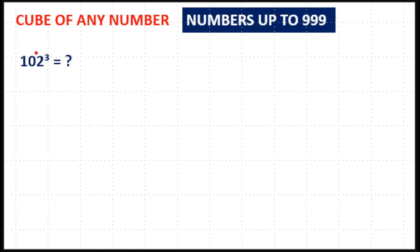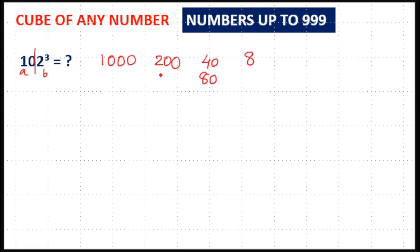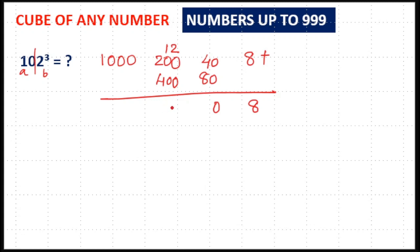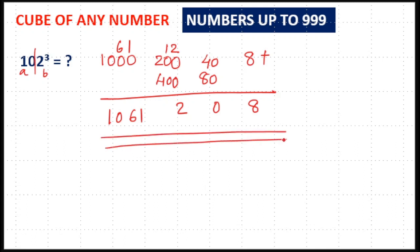Next is 102 cube — a 3-digit number. Split 102 as 10 and 2, so a = 10 and b = 2. 10 cube = 1000, 2 cube = 8. 10² × 2 = 100 × 2 = 200. 2² × 10 = 4 × 10 = 40. Double of 40 = 80, double of 200 = 400. Adding: write 8; 40 + 80 = 120 — write 0, carry 12; 400 + 200 + 12 = 612 — write 2, carry 61. That gives 1061 on the left side. So the answer is 1061208.